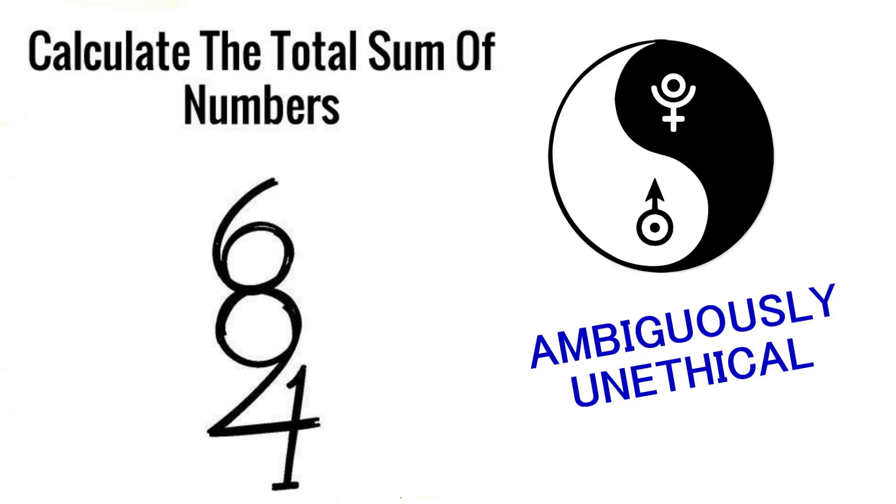Welcome to another episode of my cheating with the internet series. Today's quiz on ambiguously unethical is the challenge calculate the total sum of numbers. The goal is to uncover or discover all the hidden numbers, add them up, and calculate the correct answer.